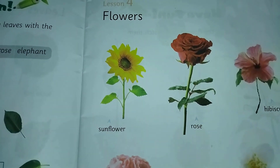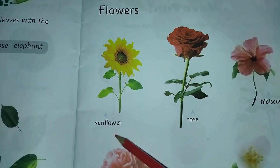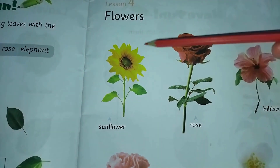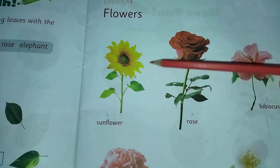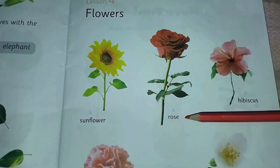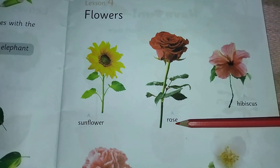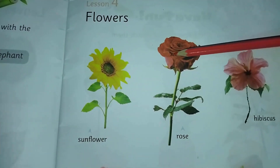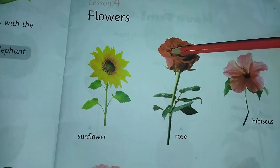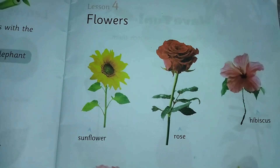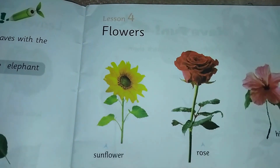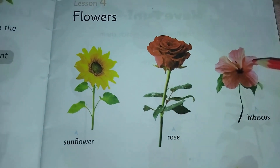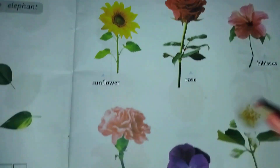The first one is sunflower. It looks like a sun shape. The other one is rose. Its petals are curly. Another one is hibiscus.